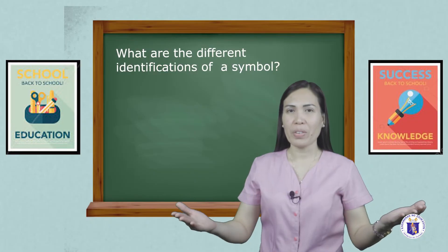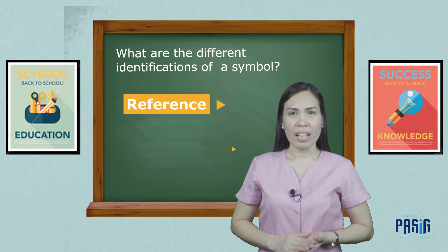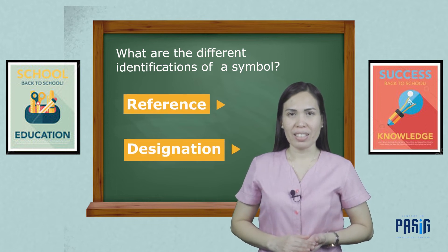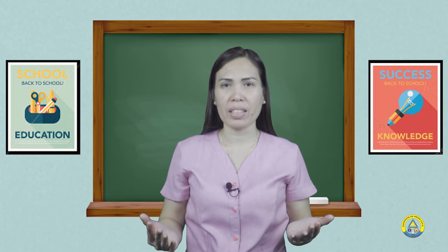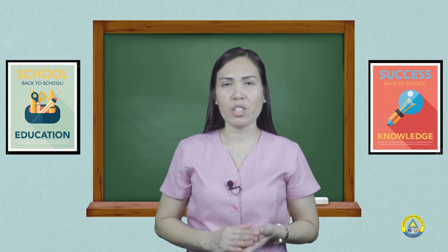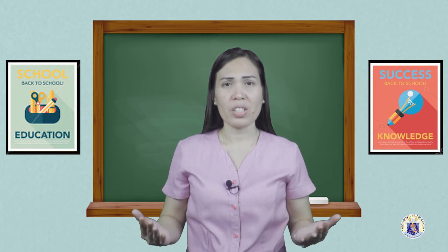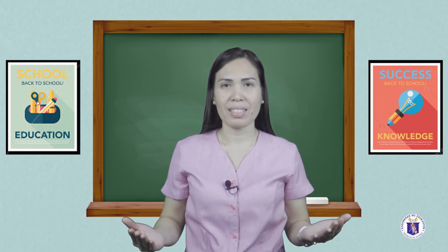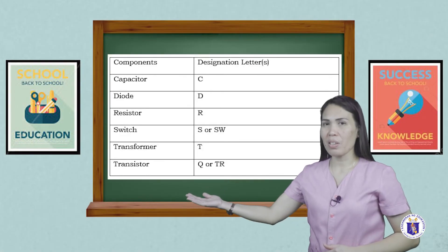What are the different identifications of a symbol? Reference and designation. Each symbol used on a diagram has its corresponding or designated letter to represent electrical and electronic components or devices. The letters are not part of the symbols. Here are the letters used on a diagram.